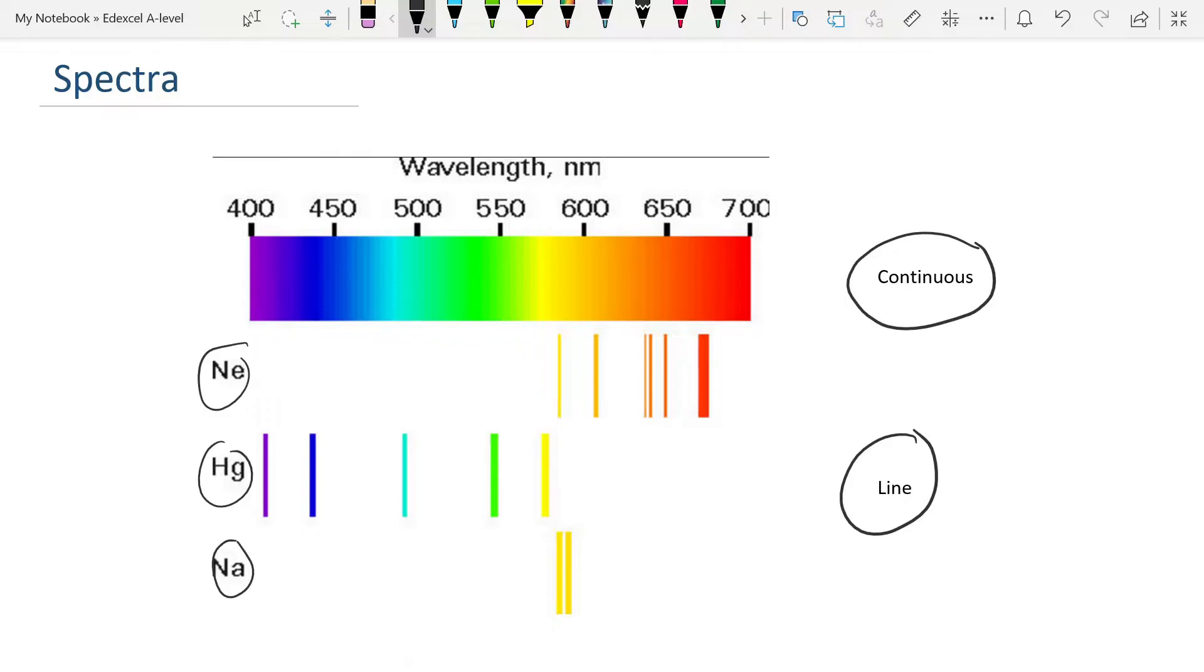These line spectra are very useful in studying the universe. I'll put a link to my Doppler effect video so you can look at how astronomers use these line spectra to figure out the distances to galaxies. Light is given out by an element because its atoms have become excited. The frequencies that are given out are dependent on the photon energies, and that is determined by what the electrons in these atoms do. We're going to investigate this using the simplest possible element, hydrogen, because it has only one electron.